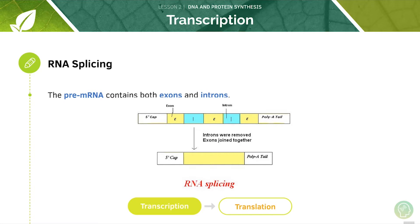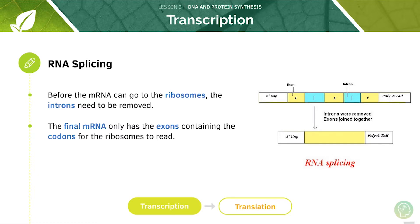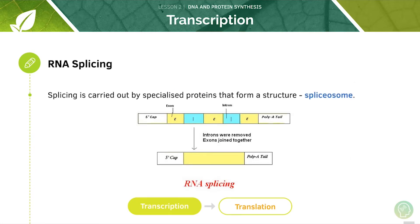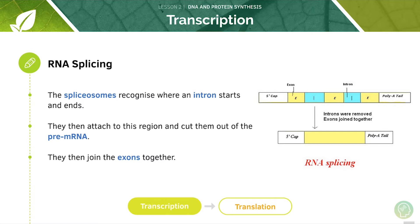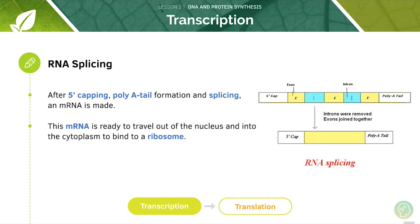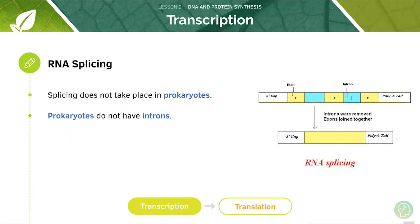The pre-mRNA contains both exons and introns. The pre-mRNA transcribed by RNA polymerase needs to have the introns removed, so that the final mRNA only has the exons, which contain the codons for the ribosomes to read. Splicing is carried out by specialised proteins that form a structure known as the spliceosome. The spliceosome recognises where an intron starts and ends, attaches to this region, cuts them out of the pre-mRNA, and joins the exons together. Following 5' capping, poly-A tail formation, and splicing, we finally form an mRNA ready to travel out of the nucleus into the cytoplasm to bind to the ribosome. Splicing does not take place in prokaryotes, since they do not have introns.